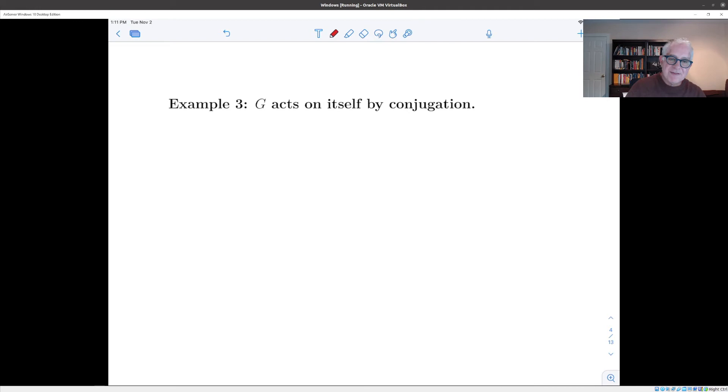Now, an important case is where we think of the group itself as the set, and we let the group act on itself. And there's a number of ways in which a group can act on itself, but one of the most important is by conjugation. So here X is G, and the map from G cross X to X sends (g, x) to g x g^{-1}. And this is an action because e x is e x e^{-1}, which is x.